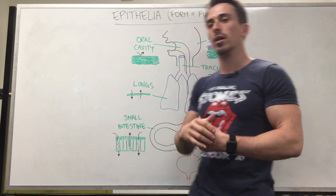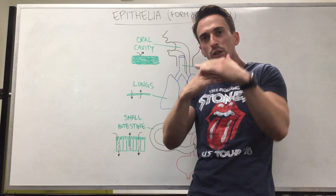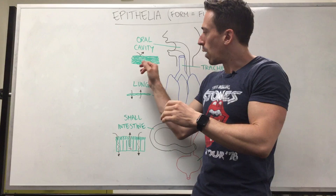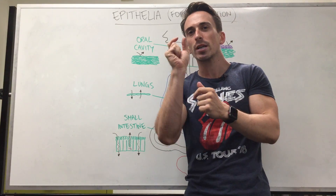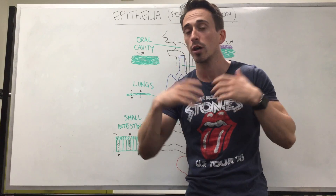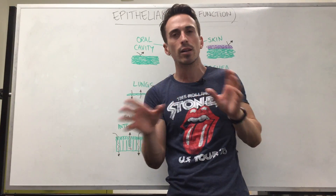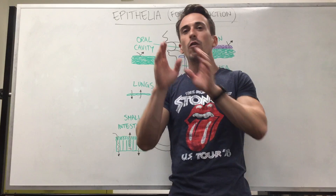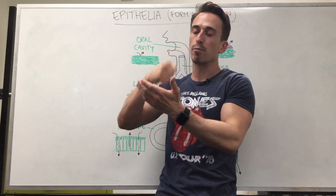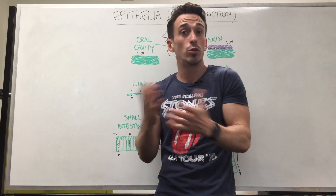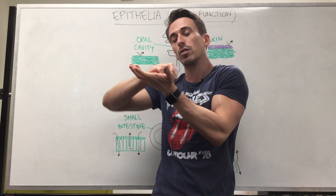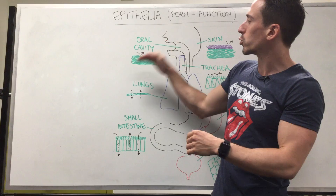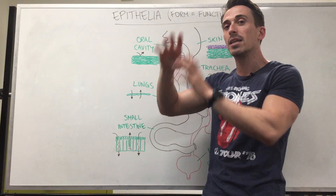We can also look at stratified squamous — squished cells packed on top of each other. Because the cells are squished, they don't have many intracellular components: no organelles, no mitochondria, no rough or smooth endoplasmic reticulum, no Golgi apparatus. This tells you these cells may likely be dead, so they're there for protection. It doesn't matter if they get abraded or swiped off due to damage — we call that sloughing. So multiple squished cells in many layers is stratified squamous, and it's there for protection.